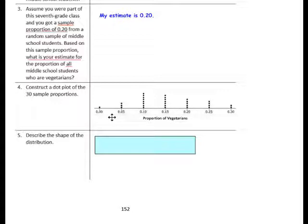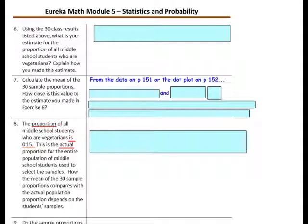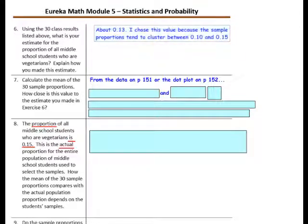Question 5: Describe the shape of the distribution. Consider whether the data is clustered, symmetrical, mound shaped, or skewed. The data is nearly symmetrical or mound shaped, centering at approximately 0.15. Question 6: Using the 30 class results, what is your estimate for the proportion of all middle school students who are vegetarian? I am estimating it to be about 0.13, because the sample proportions tend to cluster between 0.10 and 0.15.